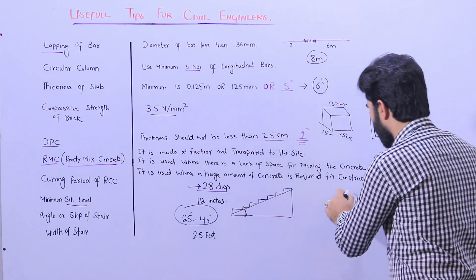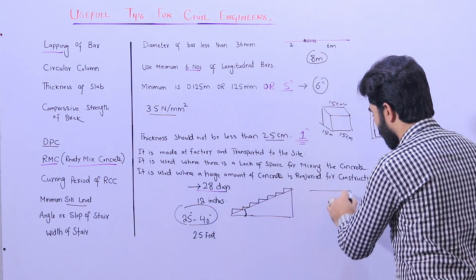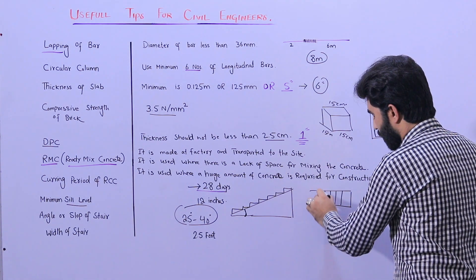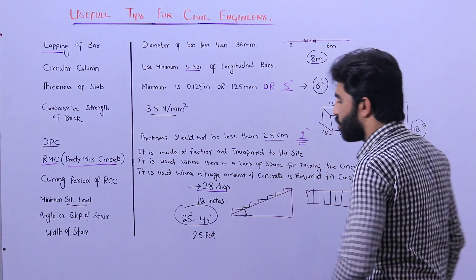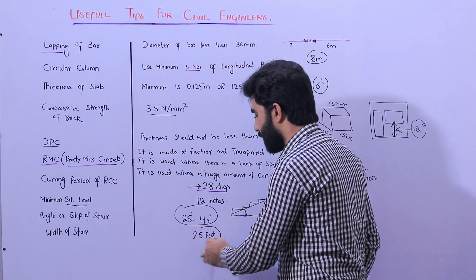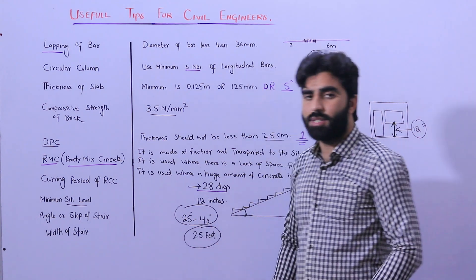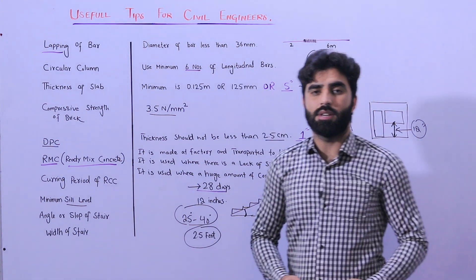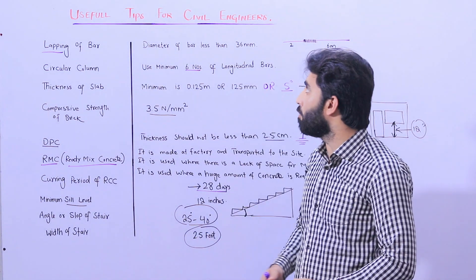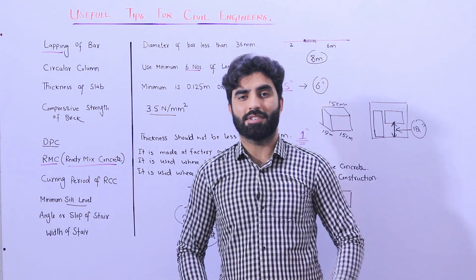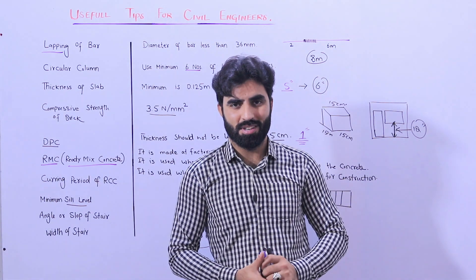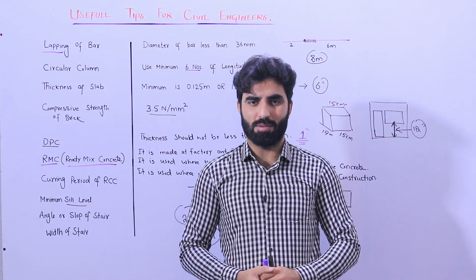The final tip is the width of the stair. The normal width of the stair should not be less than 2.5 feet, or 30 inches. These are the useful and important tips I have discussed. Thanks for watching — see you in the next video, goodbye.